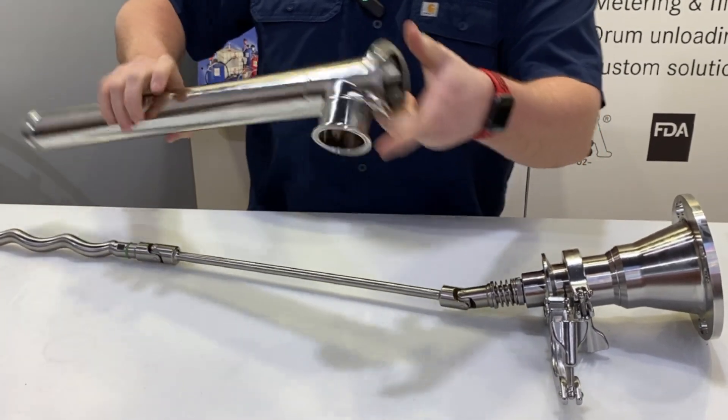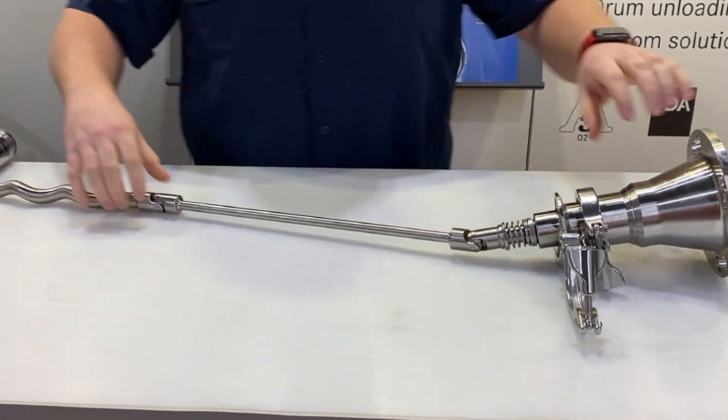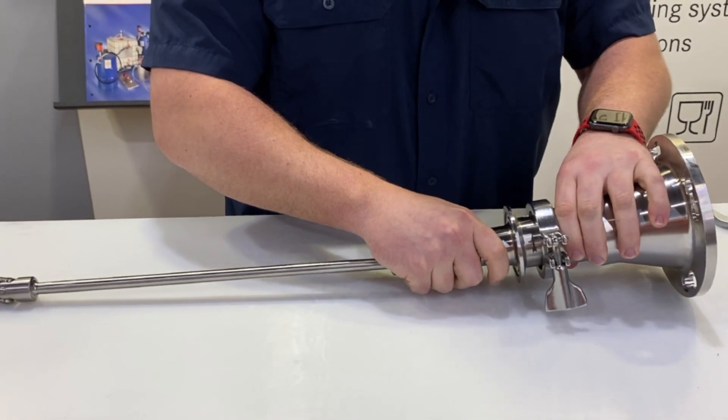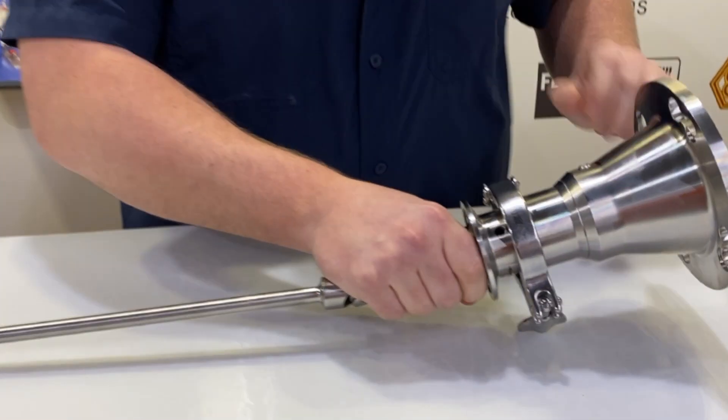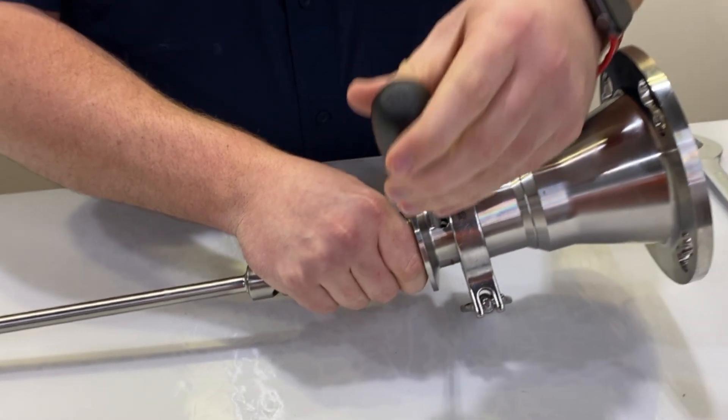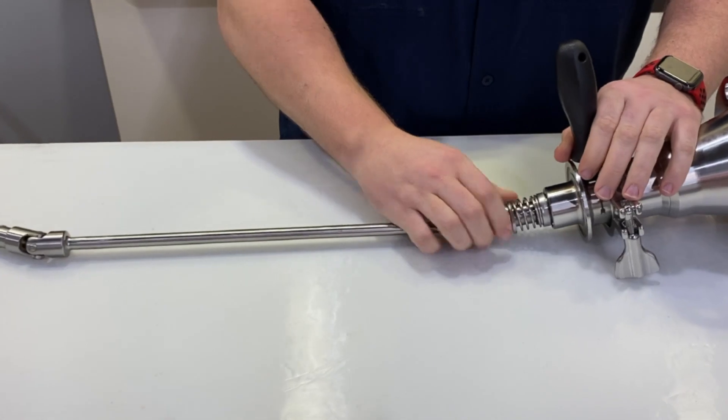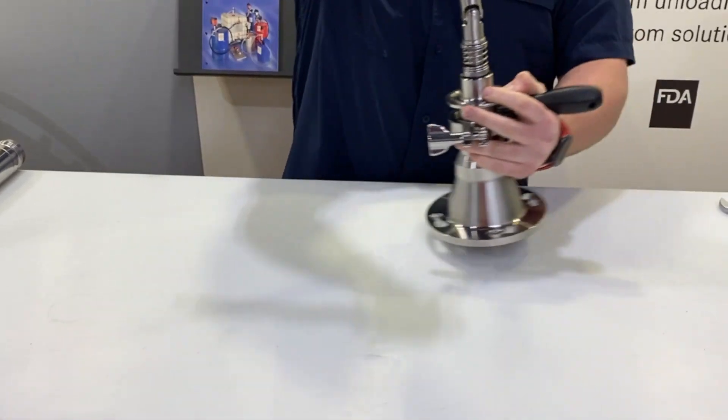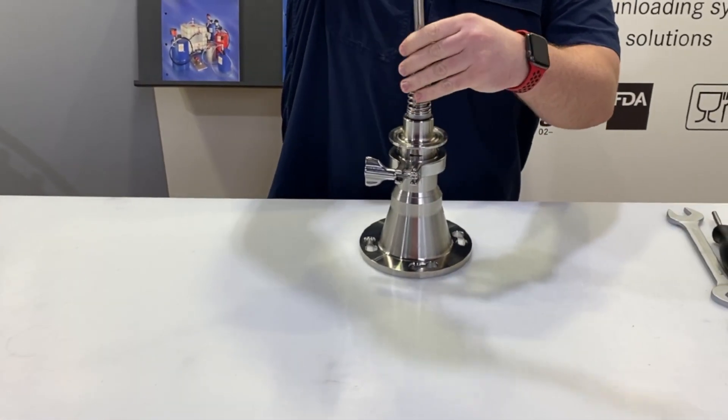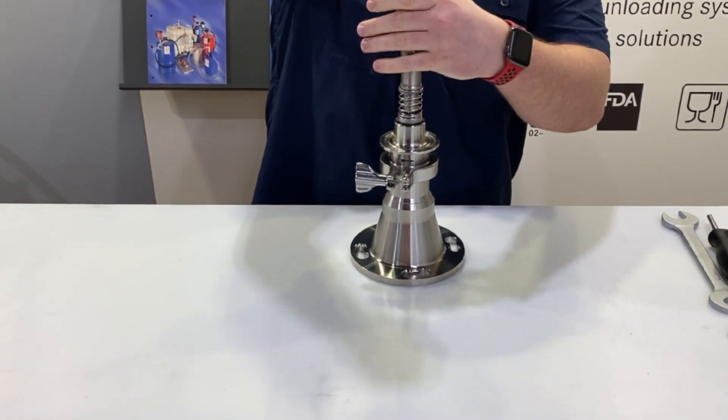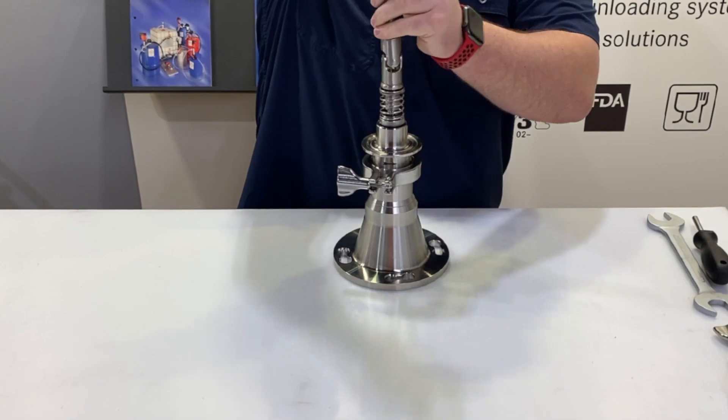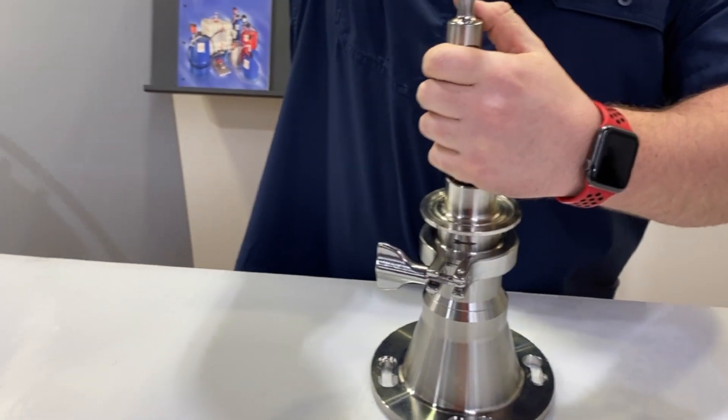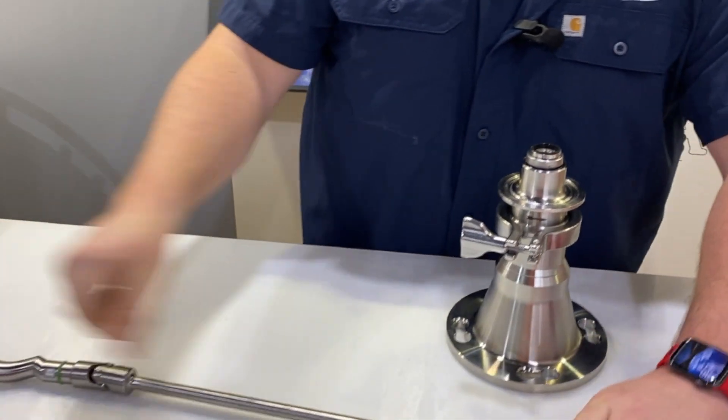We'll then remove the shaft from the bearing housing. You do that by aligning these sight windows and inserting your staking tool to keep that shaft from rotating, and then just break the shaft loose and thread the shaft off of the bearing housing.